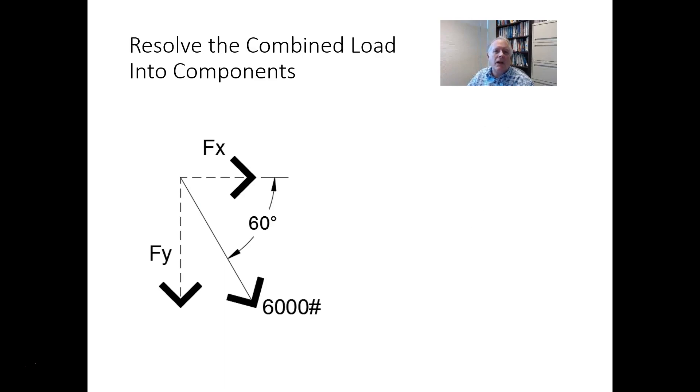Now, assuming I've done this, and I've combined all the forces, just added them together and put them at B, then 6,000 pounds is acting downward at 60 degrees from the horizontal.